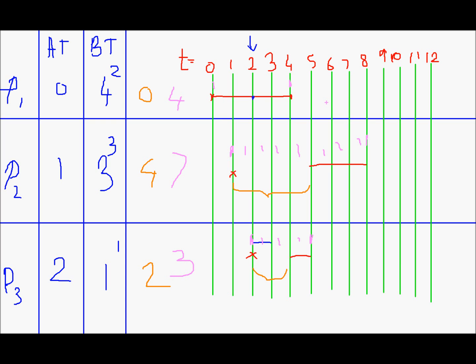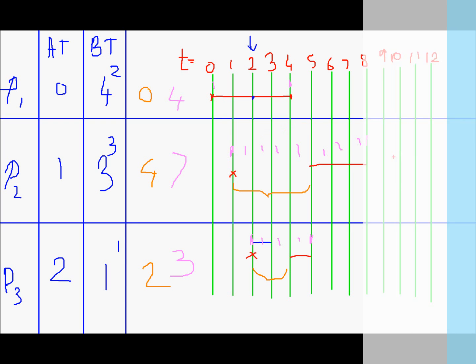So we completed scheduling using SJF. By the way this type of scheduling diagrams are also called Gantt charts. They are named after Henry Gantt. He is the guy who develops charts that proceed in the horizontal direction with time. Thank you very much for listening.